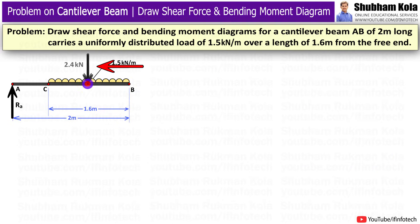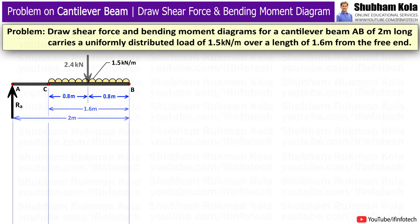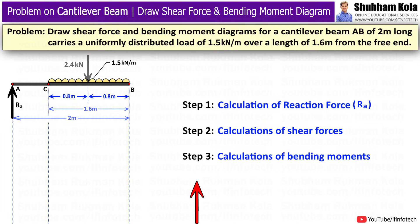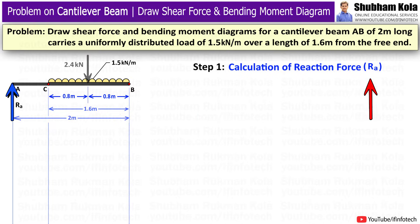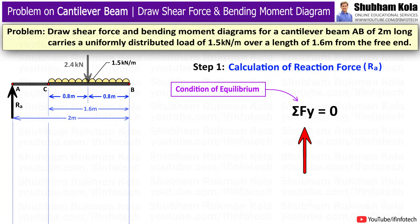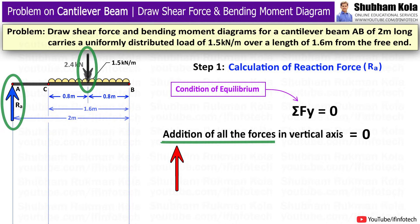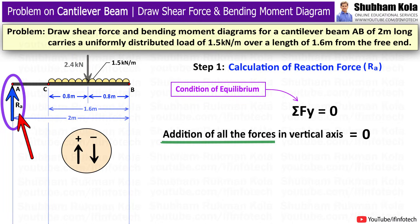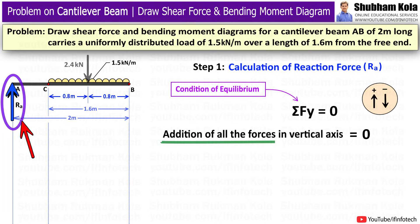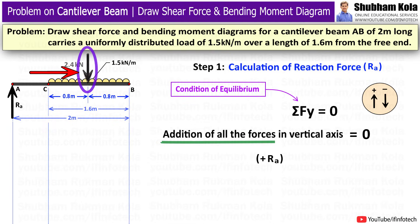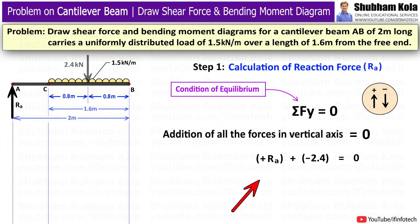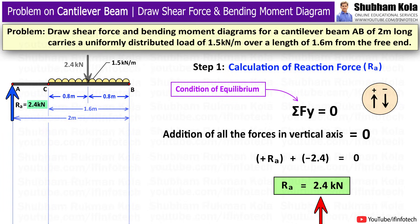This calculated point load acts on the beam at the midpoint of the length over which the UDL acts. We will solve this problem in three steps. In the first step, we calculate the support reaction force RA using the equilibrium condition: summation of Fy equals 0. Upward forces are positive and downward forces are negative. The reaction RA is upward (positive) and the 2.4 kN point load is downward (negative), giving RA equal to 2.4 kN.